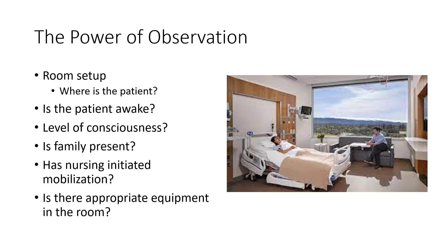Importantly: where is the patient located? Are they in the bed or seated in a chair? Are they awake — what's their level of consciousness? Is their family present? Communicating with family can be crucially important. Has nursing initiated mobilization already — is this patient so safe to ambulate they're already doing it with nursing staff? Is there appropriate equipment in the room? What do you need to go get before starting? Maybe the patient has an amputation and it's their first time getting up — you might need a walker, or a suction device for a chest tube or wound vac. Much of this can be ascertained before entering the room by talking to the nurse, talking to other staff, or reviewing the chart.